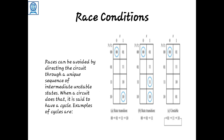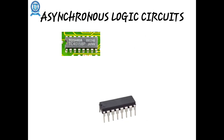Races can be avoided by directing the circuit through a unique sequence of intermediate unstable states. When a circuit does this, it is said to have a cycle. An example of cycles is: 00 to 01, 01 to 11, then 11 to 10. Critical races should be avoided, as the circuit should transition stably from one state to another.